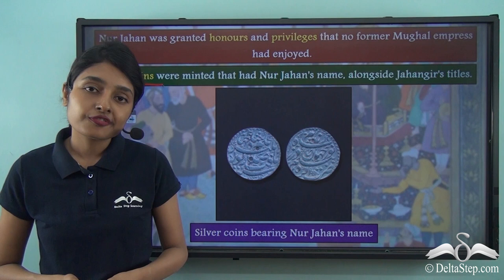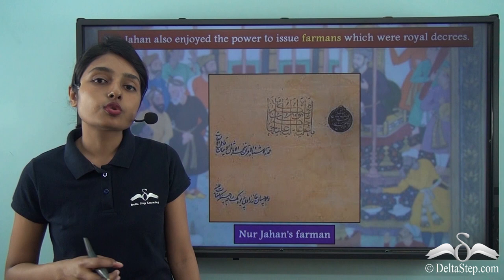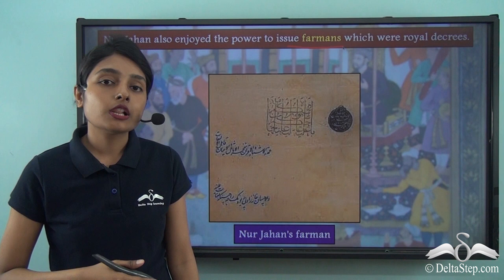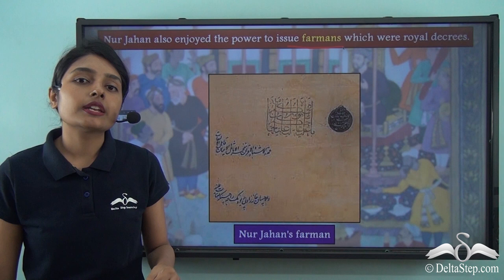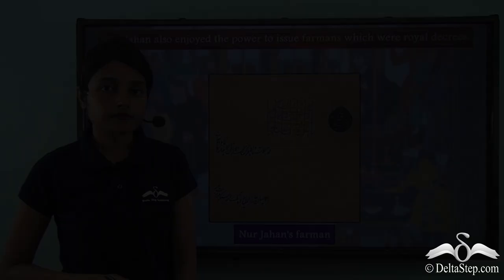When Nur Jahan became the joint ruler of the empire, she also enjoyed the power to issue firmans. These firmans were irrevocable — unchangeable royal decrees. This too was an unprecedented development, as Mughal empresses had not previously held the power to issue firmans, but Nur Jahan nevertheless did so.